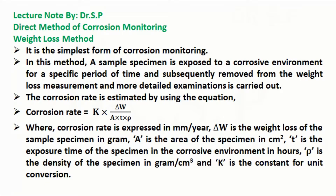Where corrosion rate is expressed in mm per year; delta W is the weight loss of the sample specimen in grams; A is the area of the specimen in cm²; T is the exposure time of the specimen in the corrosive environment in hours; rho is the density of the specimen in grams per cm³; and K is the constant for unit conversion.